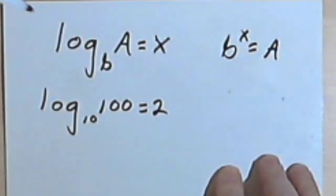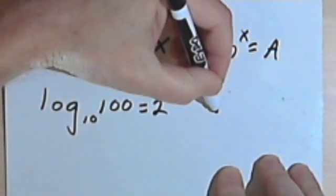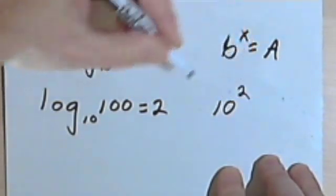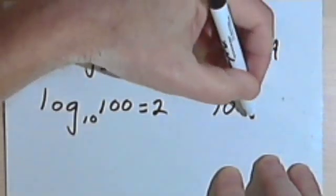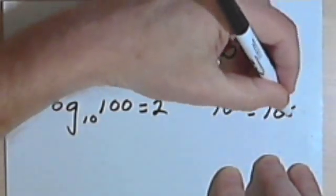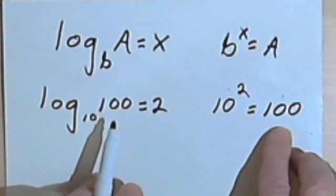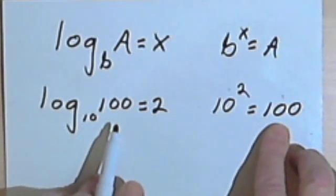How do I know that? Well, because the base 10 raised to the second power, the exponent 2, equals the argument of my logarithm, equals 100.